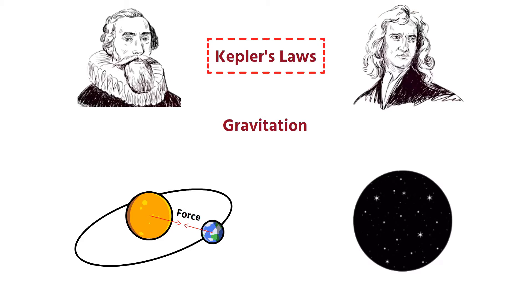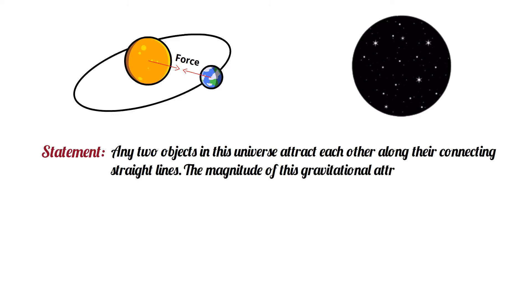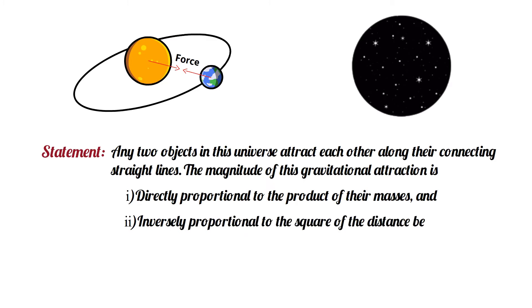To measure this gravitational force, Newton introduced a law known as Newton's Law of Gravitation. The law states that any two objects in this universe attract each other along their connecting straight lines. The magnitude of this gravitational attraction is directly proportional to the product of their masses and inversely proportional to the square of the distance between them.